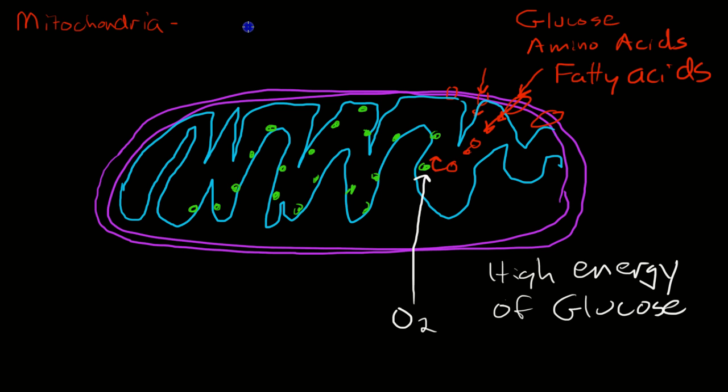This series of reactions is known as the Krebs cycle. I'm not going to get into all the details, but the glucose and oxygen combined go through a series of reactions, and the glucose is broken down piece by piece. The end result is lots of carbon dioxide, water, and most importantly, lots of energy.